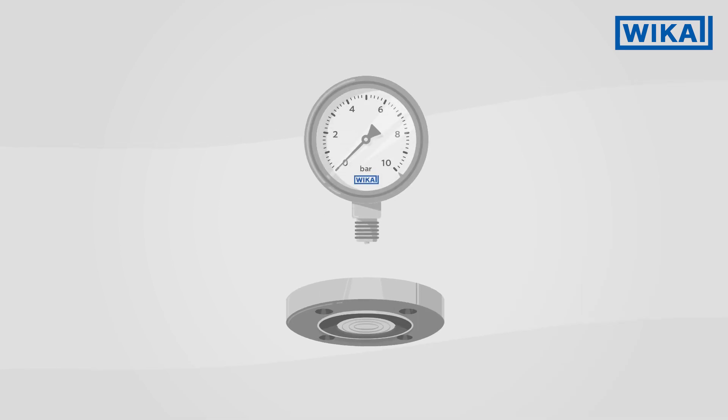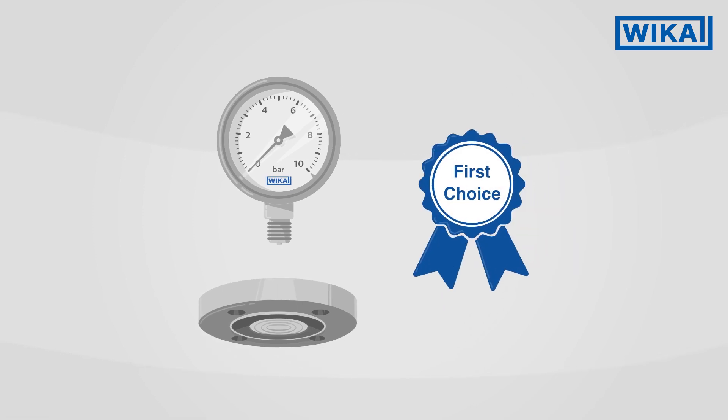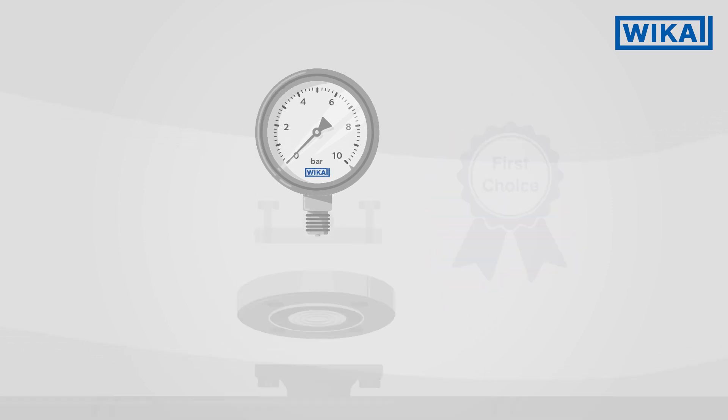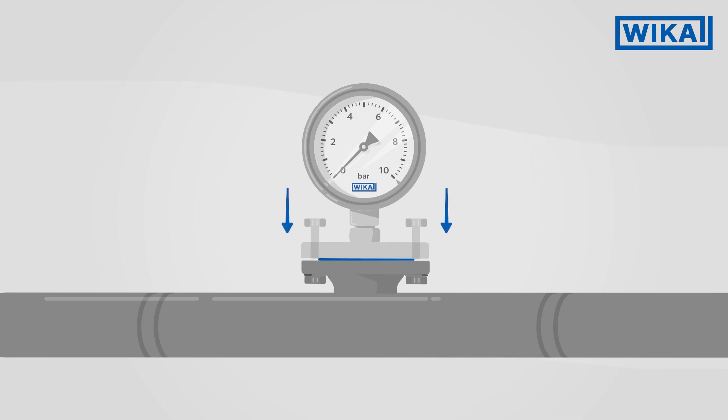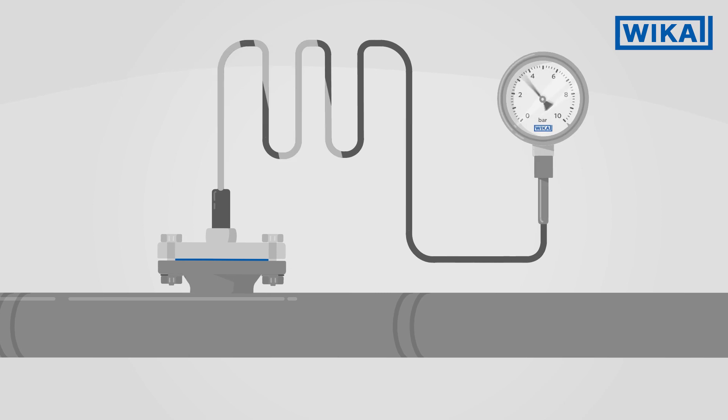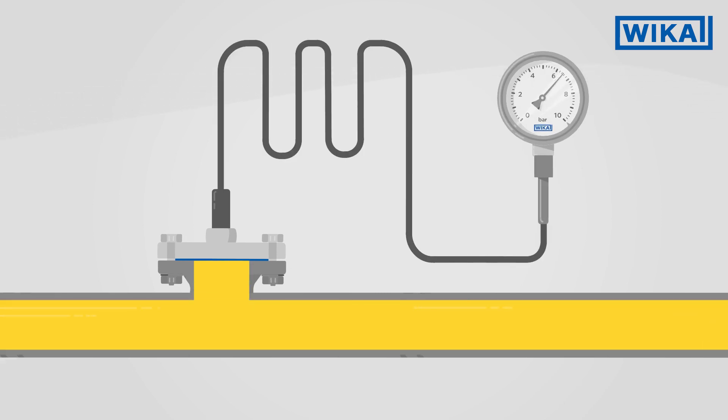Diaphragm seals with flange connection are multipurpose connections and the ones most frequently used worldwide. Flange connections offer numerous advantages. Their mounting prevents the capillary line or the already connected cable from twisting. The larger pipe diameter also allows for highly viscous and flocculent media.